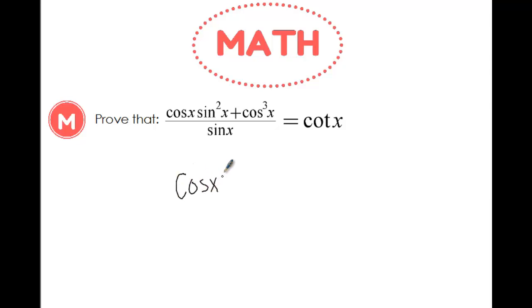So I'm going to take cosine and factor it out on the numerator so that I get sine squared x plus cosine squared x over sine x. Once you start doing this process,